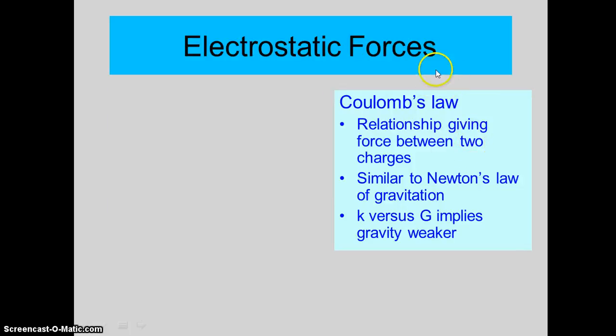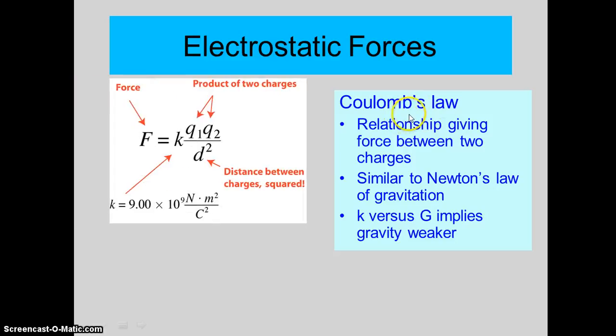Now we're going to find that charges attract or repel each other, and this was first discovered by a guy named Coulomb. It's called Coulomb's Law. There's the equation - notice there's a constant in this equation, a constant of nature called the Coulomb constant, 9 times 10 to the 9th, and the units are newtons times meters squared per coulomb squared. We're going to do an example of it.